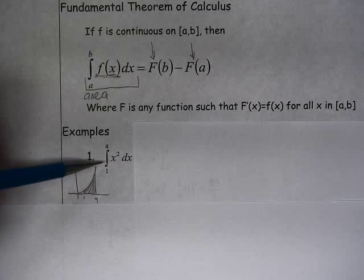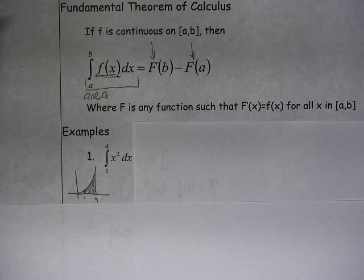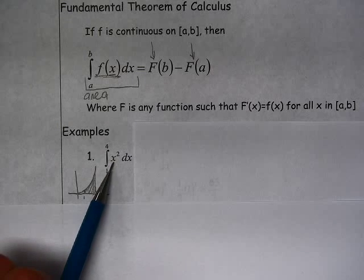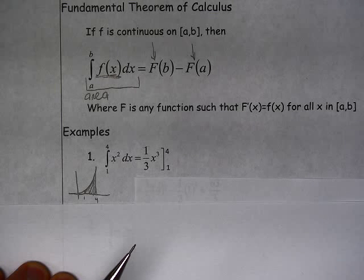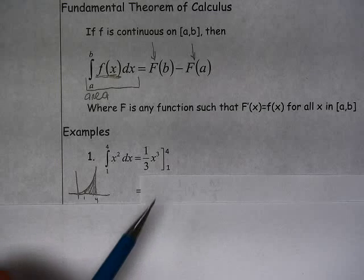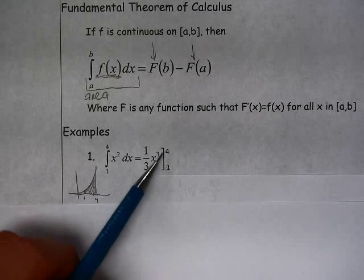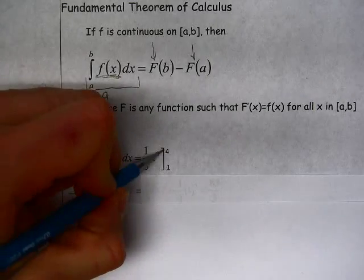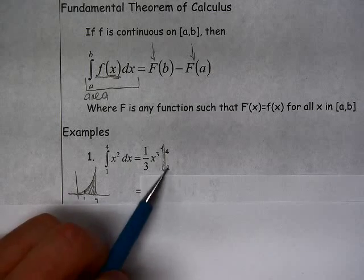Using the antiderivatives and the fundamental theorem of calculus, we can find the actual area below that curve and above the x-axis. So to do that, we have to find the antiderivative of x squared. So we know we add 1 to the exponent and divide by the new exponent. And we're going to evaluate that between 1 and 4.